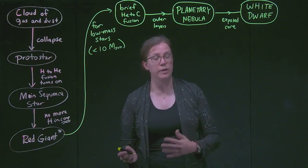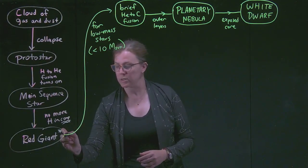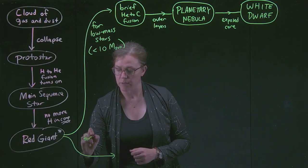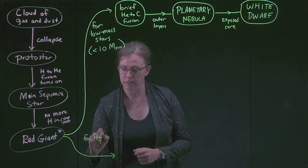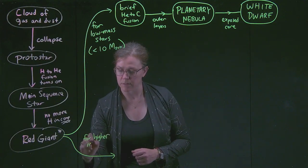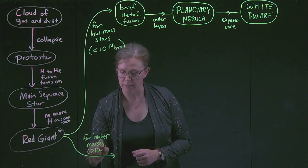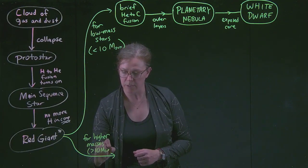This is the most common track that stars can travel on. However, we know that that's not the only thing that happens. For high mass stars, for higher masses, that's going to be greater than 10. And again, that's a rounded value.